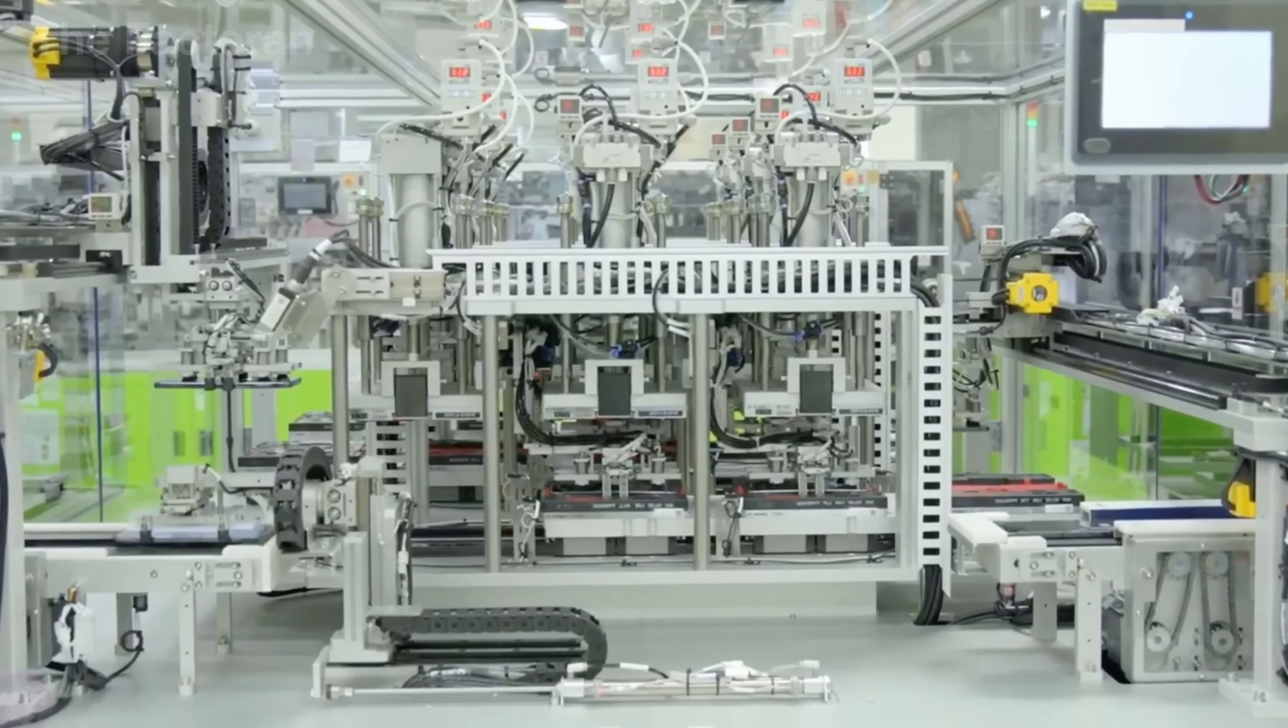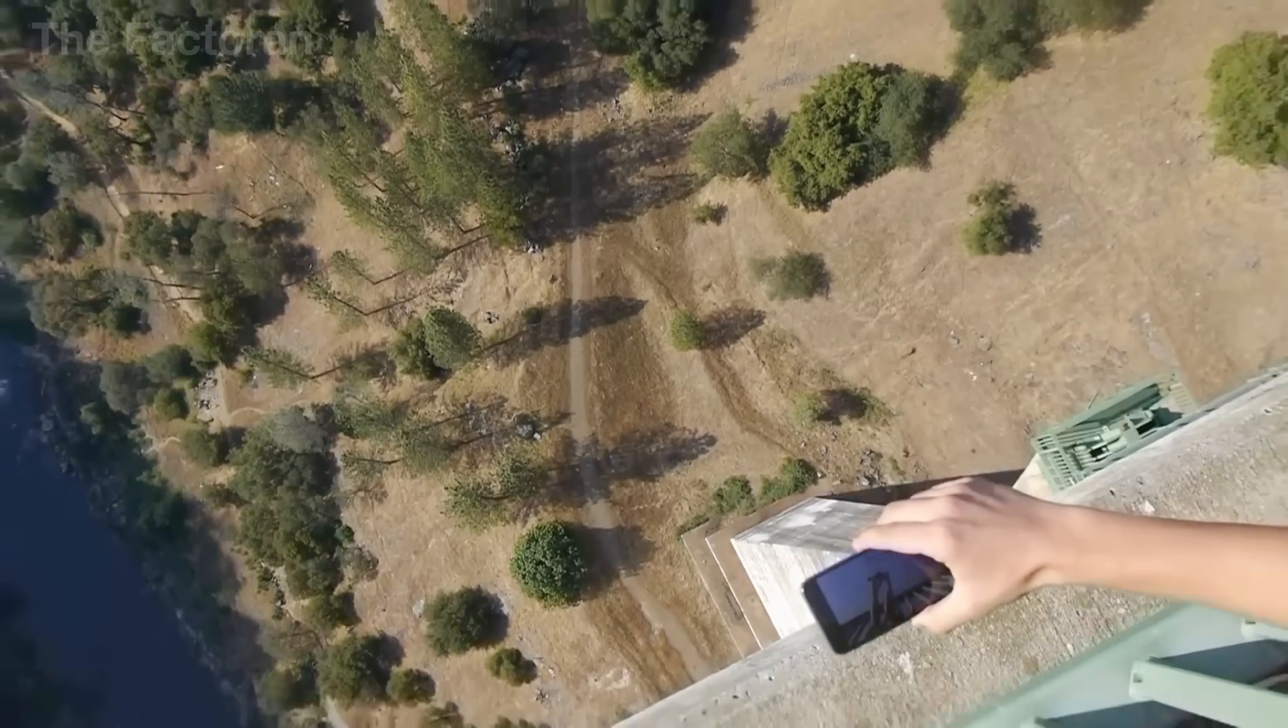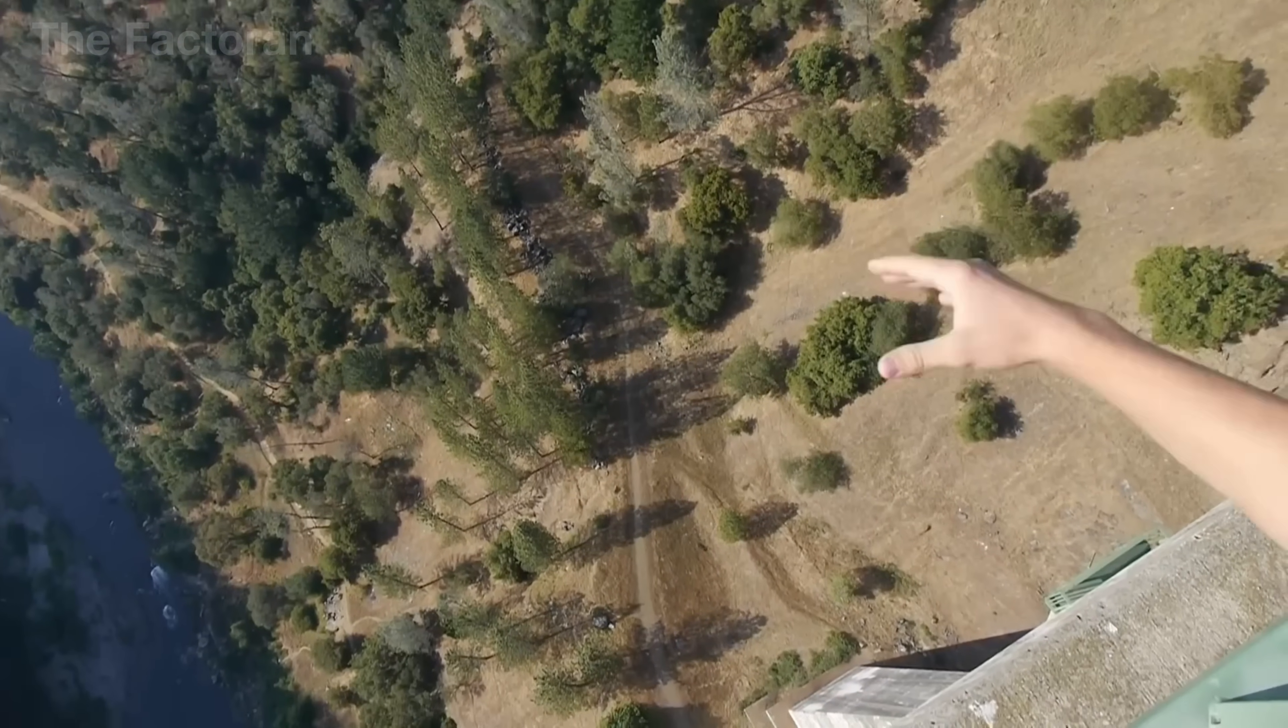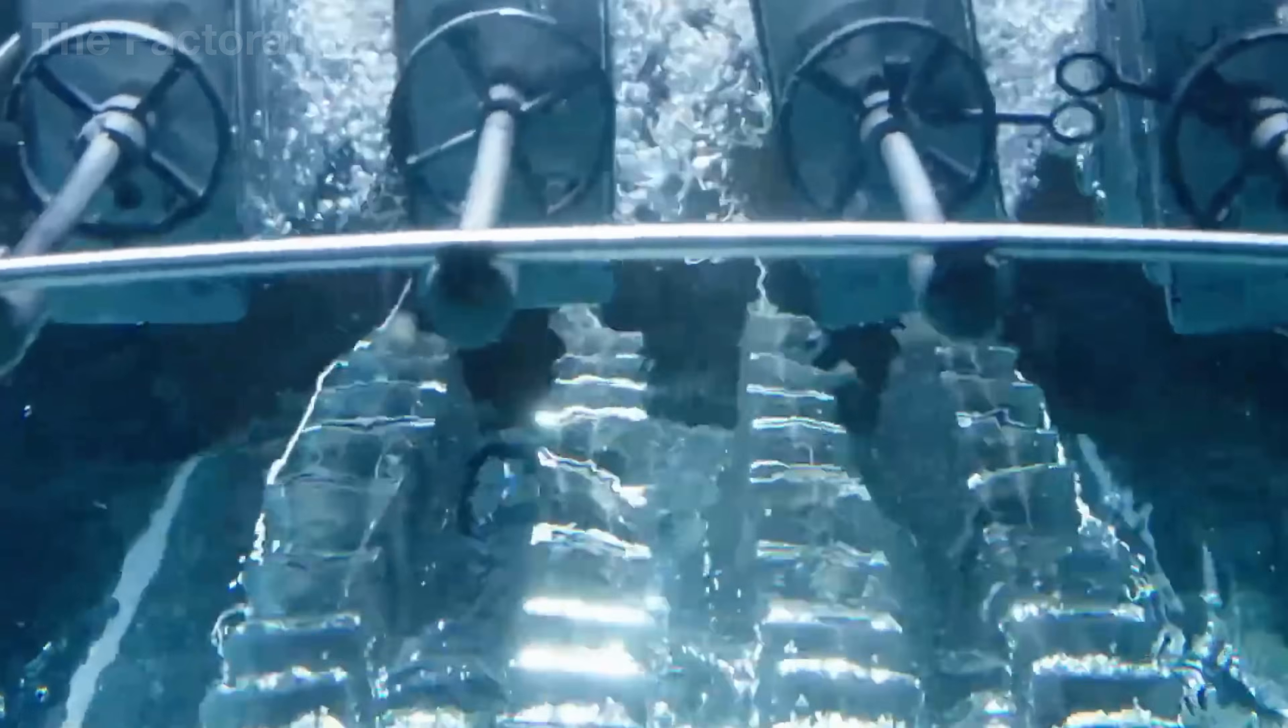And that is the complete journey of an iPhone, from raw materials to the finished product. Which iPhone model are you using right now? And what feature do you find the most impressive? Leave a comment below to share your thoughts and experiences.